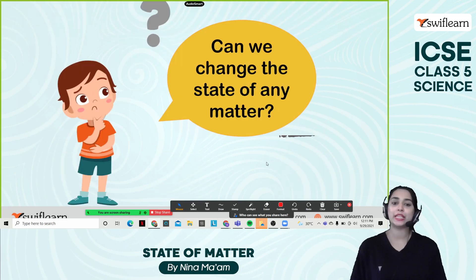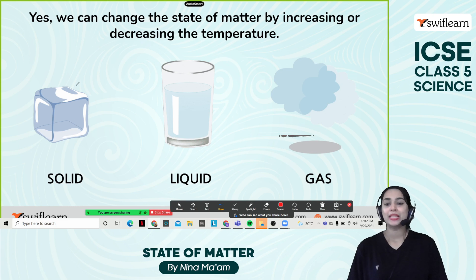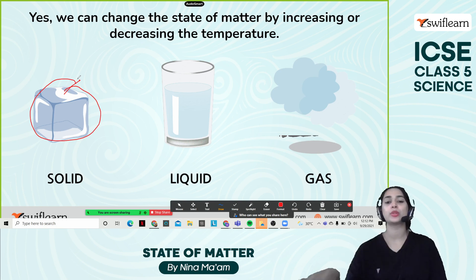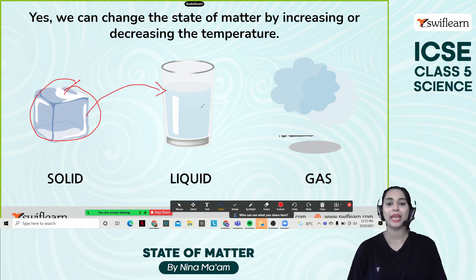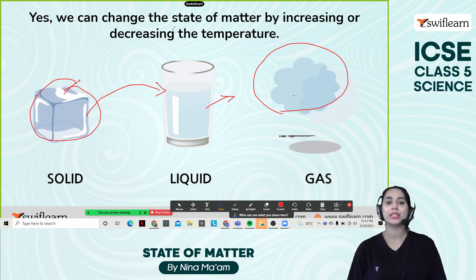Can we change the state of any matter? Yes. We can change the state of matter by increasing or decreasing the temperature. For example, we take an ice cube and keep it outside the fridge — what will happen? It will melt and turn into water. And if we boil the water, what will happen? It evaporates and gas will form. So we can change the state of matter by increasing or decreasing the temperature.